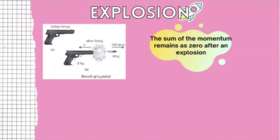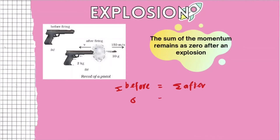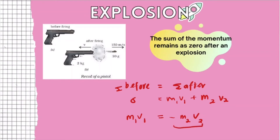Based on the principle of conservation of momentum, the total momentum in the system must be constant — just like in collision, the total momentum before must equal the total momentum after. Since before the explosion the two objects are stationary, the total momentum before is equal to zero, and the total momentum afterwards must also equal zero. If we rearrange this equation, we get that the magnitude of momentum of the first object equals that of the second object — it is just that the second object's momentum acts in the opposite direction, hence the negative sign.